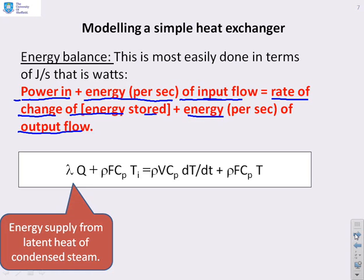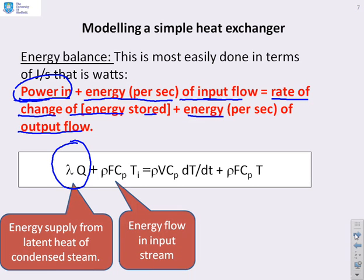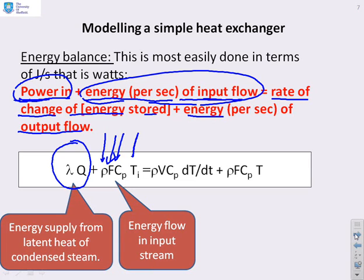Let's look at all these terms. First, the power in comes from the latent heat of the steam. Lambda is the latent heat per kilogram and Q is the flow rate of steam in kilograms per second, so the power coming from the steam is lambda times Q. What about the energy coming in from the input flow? We've got a flow rate F, a density rho, so the mass flow rate is rho times F. We've got a specific heat C_p and an input temperature T_i, so the energy per second from the input flow is rho times F times C_p times T_i.